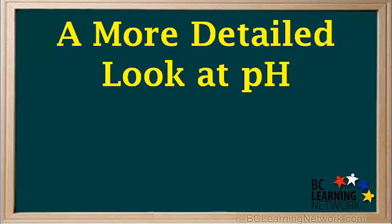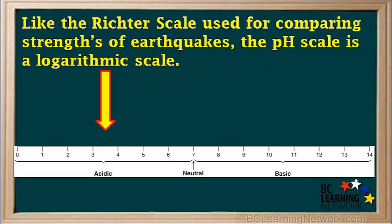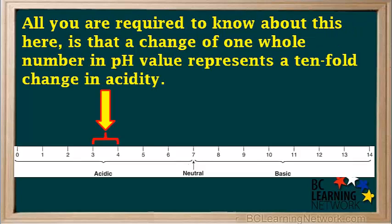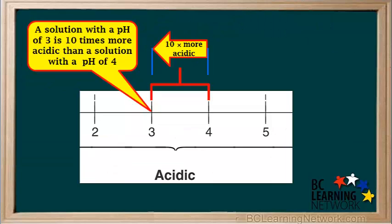Now we'll take a closer look at pH and see what it means quantitatively. Like the Richter scale used for comparing strengths of earthquakes, the pH scale is called a logarithmic scale. All you are required to know here is that a change of one whole number in the pH value represents a tenfold change in the acidity. Remember, as the pH gets lower, the acidity gets higher. So a pH of 3 is more acidic than a pH of 4. Due to the nature of the pH scale, a solution with a pH of 3 is ten times more acidic than a solution with a pH of 4.